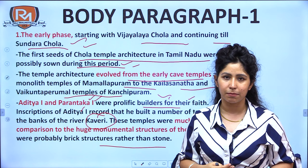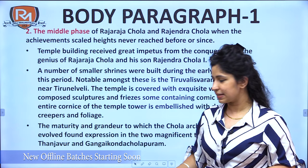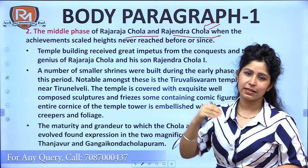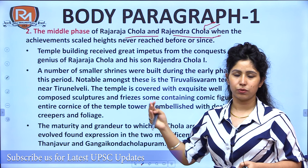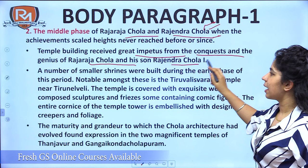Here you can talk about the evolution of temples and how each phase differs from the previous and next. In the middle phase, the prominent rulers were Raja Raj Chola and Rajendra Chola — this was when the Chola Empire achieved great heights. A lot of wealth was available and both rulers were patrons of art and architecture. Temple building received great impetus from the conquests and genius of Raja Raj Chola and his son Rajendra Chola I.